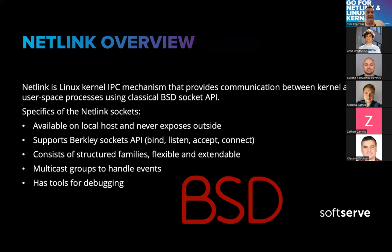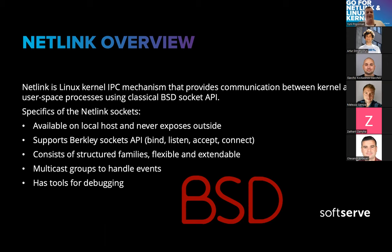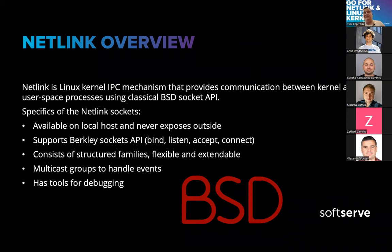First of all, what is Netlink? It's simply an IPC — an inter-process communication mechanism that gives user space applications the ability to interact with the Kernel using just a simple socket. A few words about the Netlink socket because it's a bit different from a usual network socket. It's available only on your local machine — only localhost — and is never exposed outside. It supports the Berkeley Sockets API, so you can do bind, listen, accept, and connect. Netlink itself consists of structured families — functionally grouped things you can interact with.